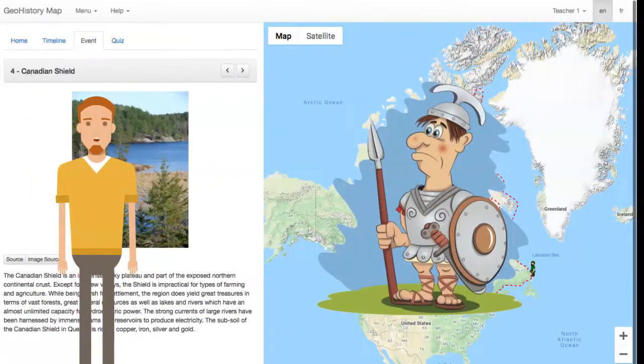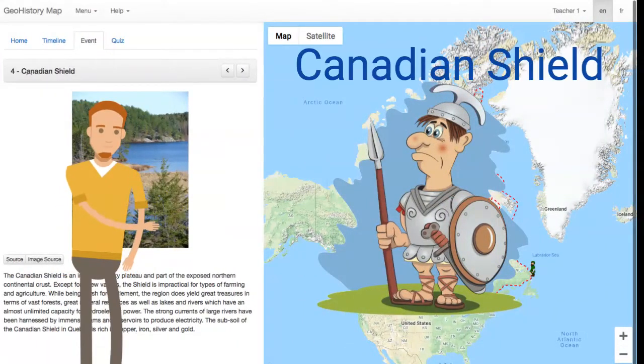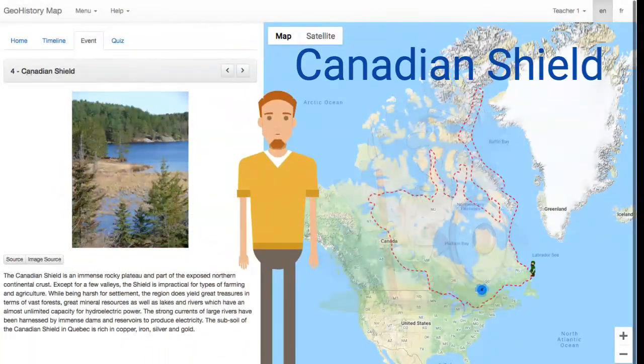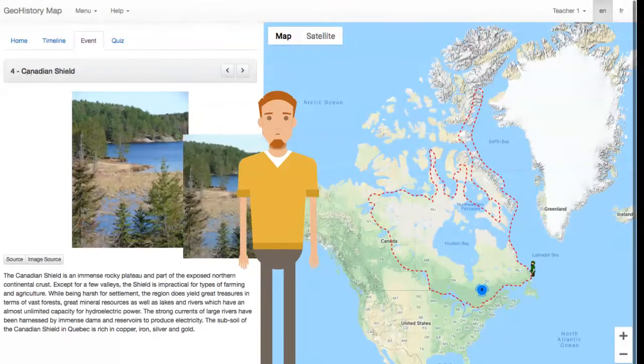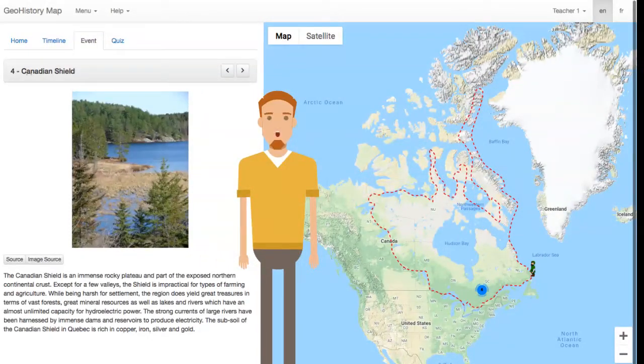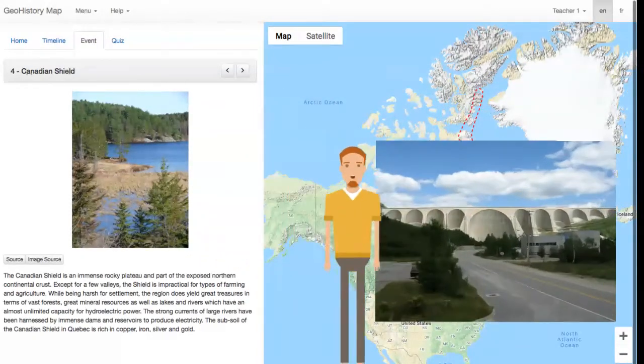The second region is the Canadian Shield. No, not that kind of shield. The Canadian Shield is a huge rocky plateau filled with lakes and rivers. That is why hydroelectric dams are often built in the area, such as the Manic Dam.